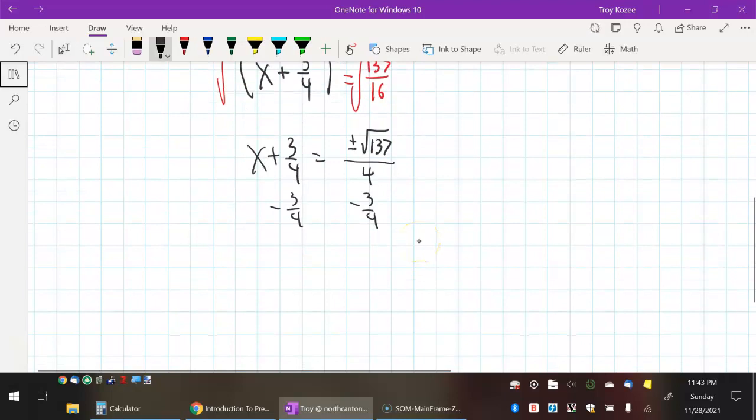But now, I just subtract 3/4 to the other side. And these two fractions conveniently have the same denominator. So I can just add up their numerators. -3 ± √137 over 4. And those are my two answers.